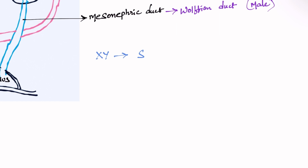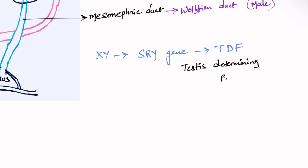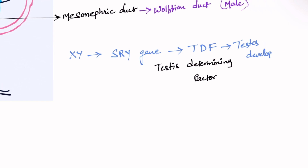For complete development of the gonads, we need certain genes and cells to promote development of the mesonephric duct into male structures. In males, the Y chromosome is present. On the Y chromosome, the SRY gene is present, which produces the testis-determining factor. This helps in testicular development.